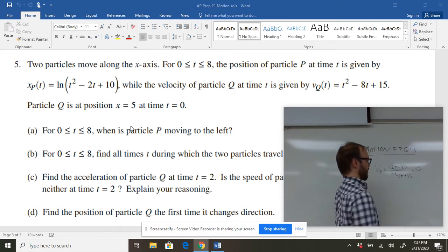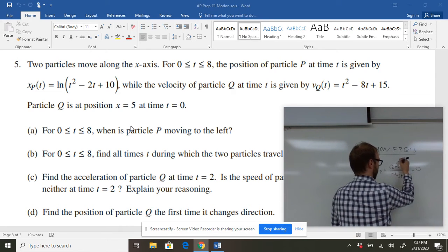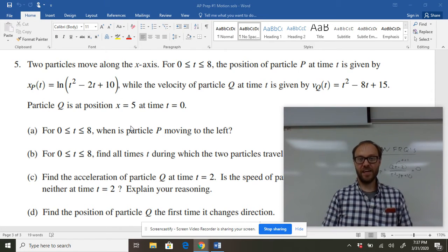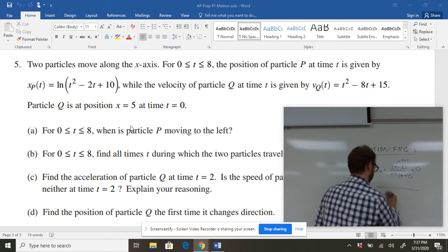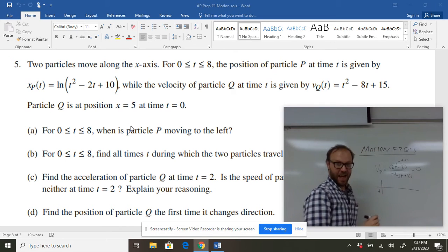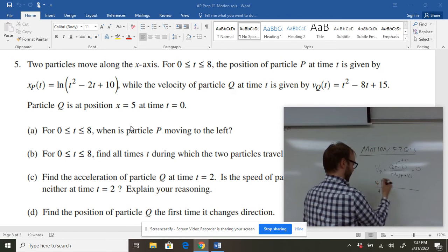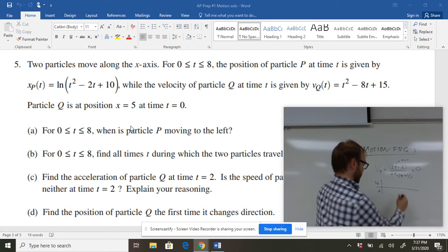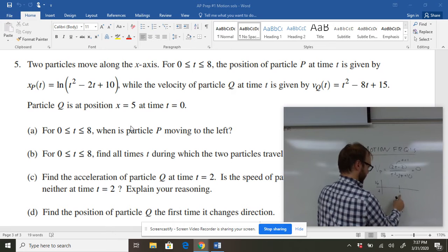Of course, a fraction is equal to zero when the numerator is equal to zero. That's going to be T equals 1. So I'm going to make a little number line here. We need to know when it has a negative velocity. So I'm going to look at T and I'm going to look at my velocity sign. And we should just be able to substitute in here. So here's one, and I'm just going to do a little number line here.